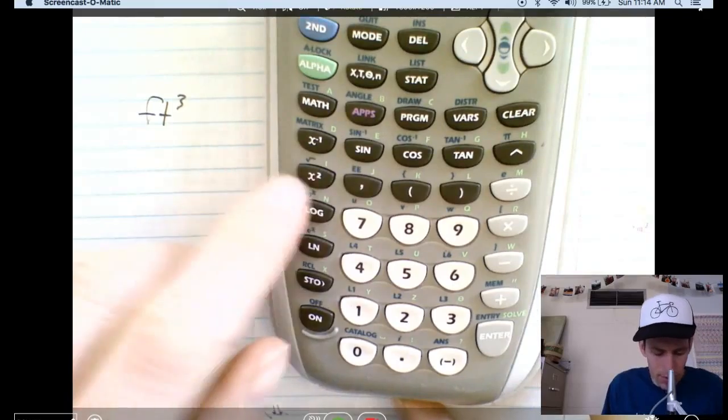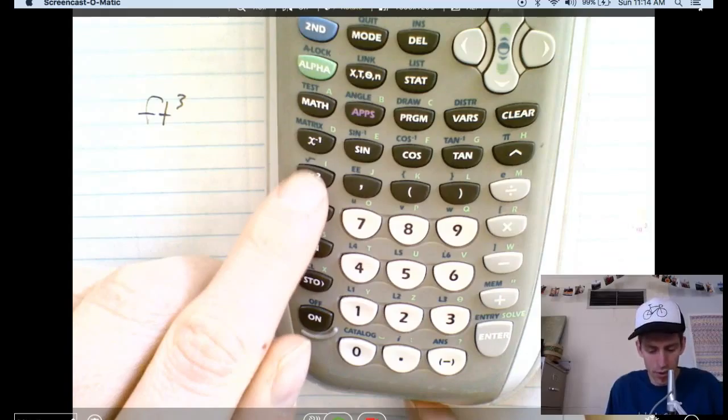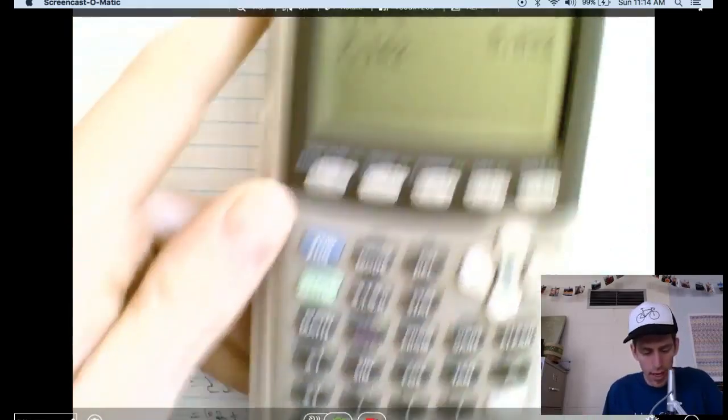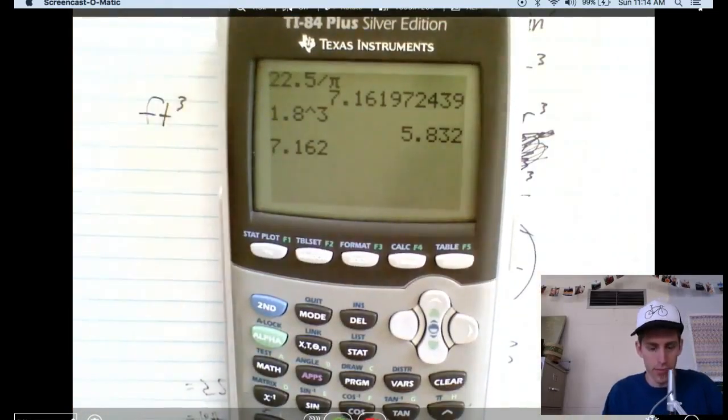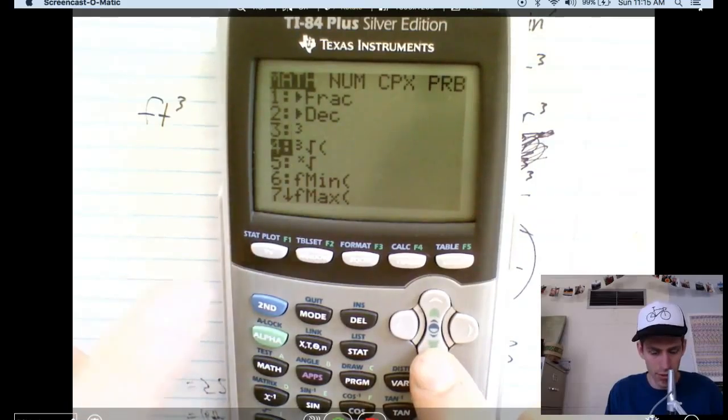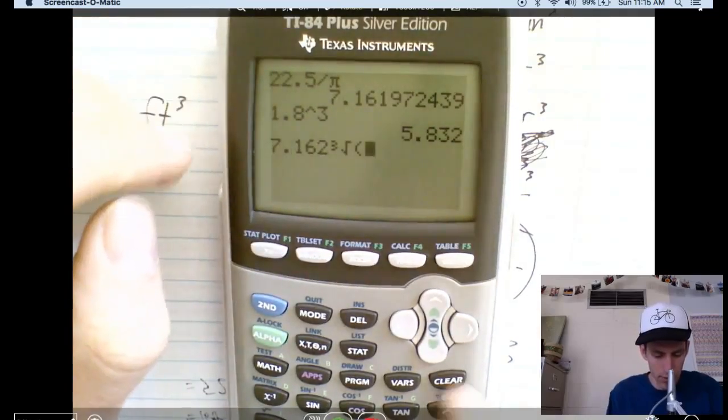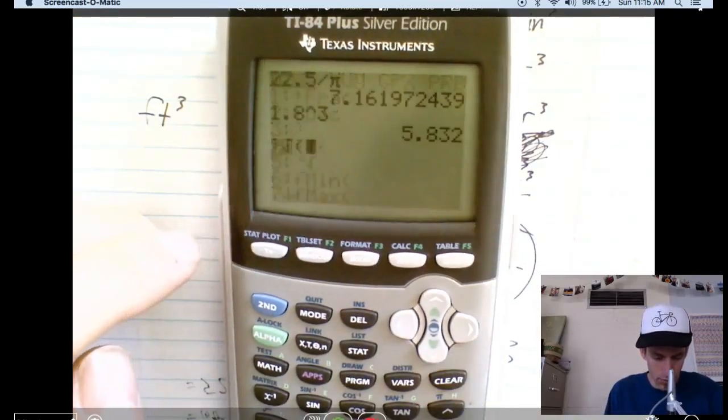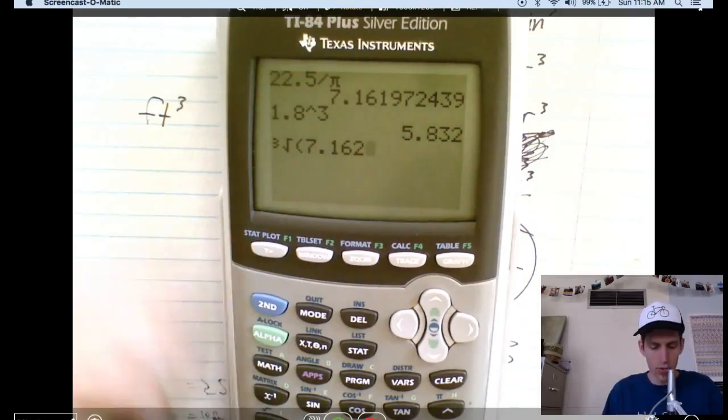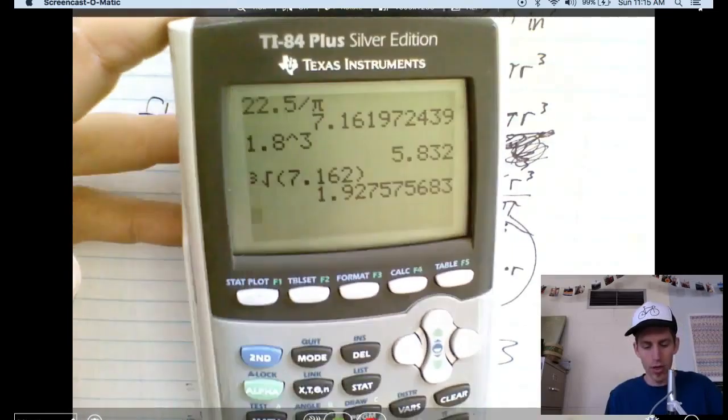Well, my calculator, there's the square root symbol, but I don't see one with the cubed root, but I know it can do it. And so, what I'm going to do is I'm going to put in 7.162. And I'm going to go to my math and see if I can find, oh, there it is. Look, I go down to cubed root. Three square root of, and then give some parentheses. Okay, so I have to do that first. Math. Cube root of 7.162. I can put my other parentheses if I want. Doesn't really matter. Enter. 1.927.